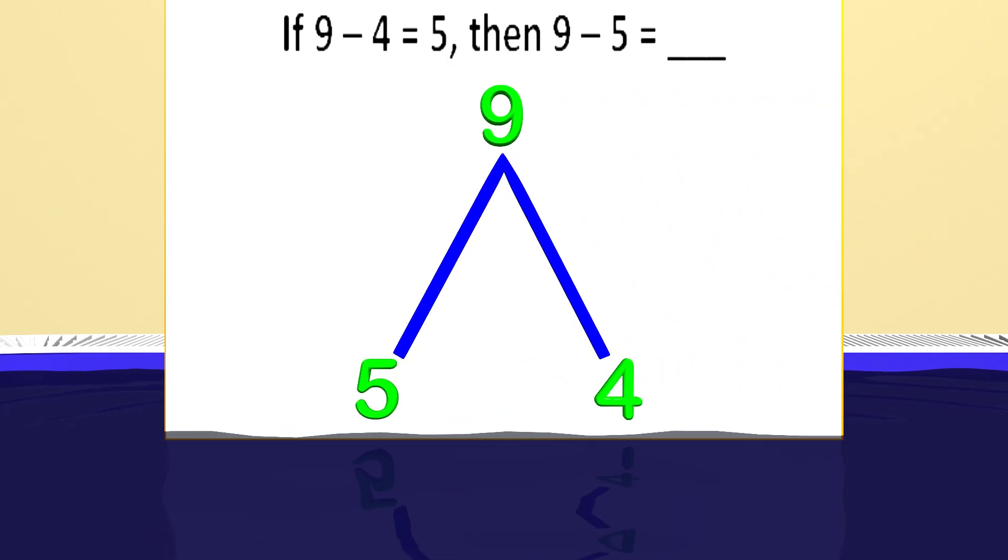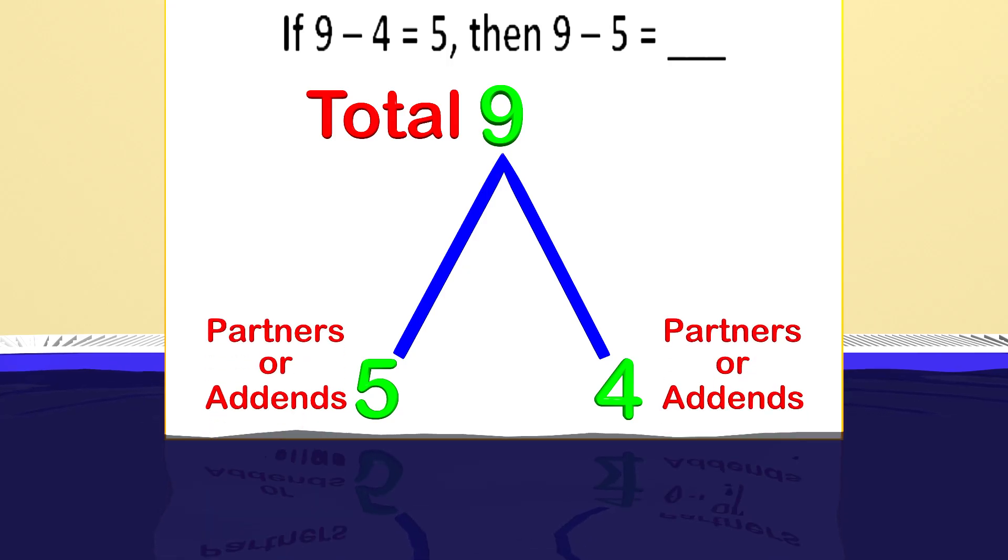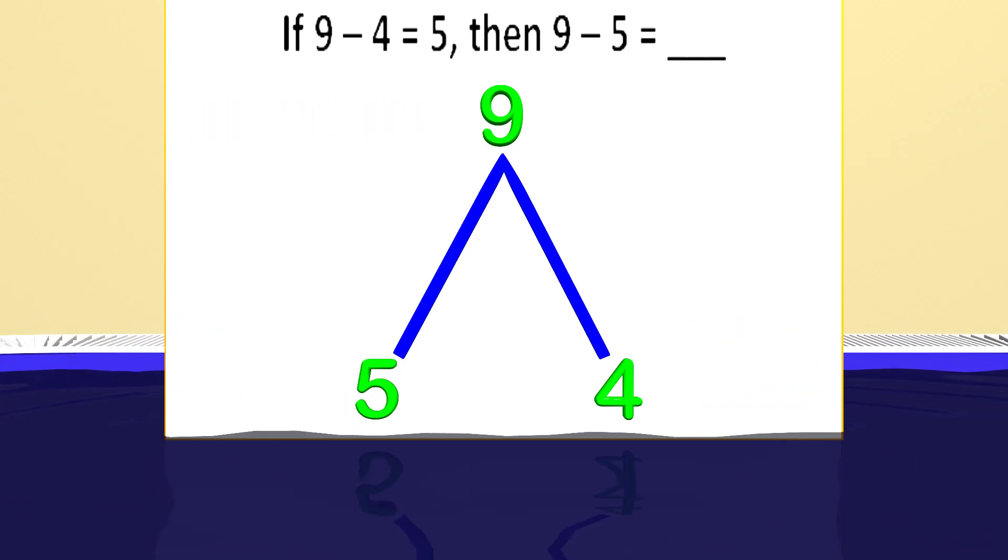Here is a math mountain. If you are not familiar with a math mountain, that is just fine. At the top, we have the total. At the bottom, we have what we call partners or addends. The total is 9 and the partners are 4 and 5. We can use both subtraction and addition with this math mountain. If we add the 4 and 5 together, we get the total of 9. We can also subtract, just like the first part of the problem below. 9 subtract 4 equals 5.